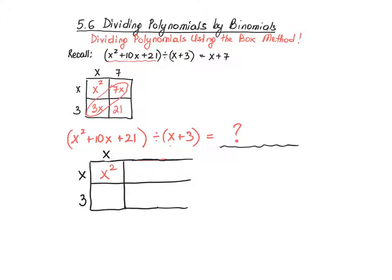Now, knowing that my first column is having x at the top, I can fill in my next cell down in the second row because x meets with 3 to give me 3x. So far, I have x squared and 3x in there.